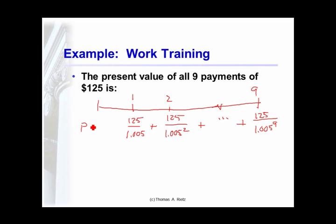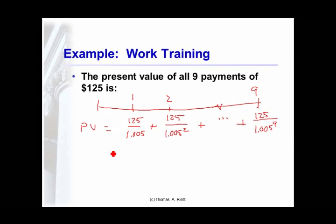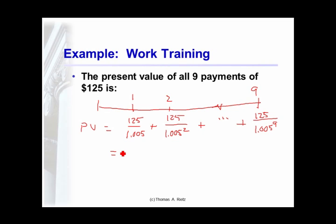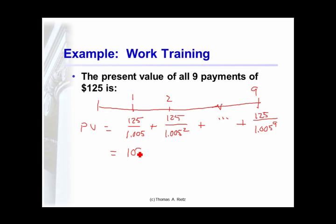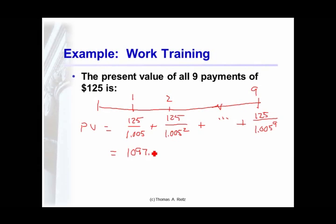The value of all of these cash flows, you would just add them up. And this will take you a little while. Well, but if you do this total calculation, the cost of these nine cash flows is $1,097.38.